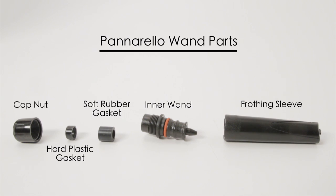Here are the five parts of a Panarello wand. We have a nut, a small hard plastic gasket, a large soft rubber gasket, the inner wand, and the frothing sleeve.